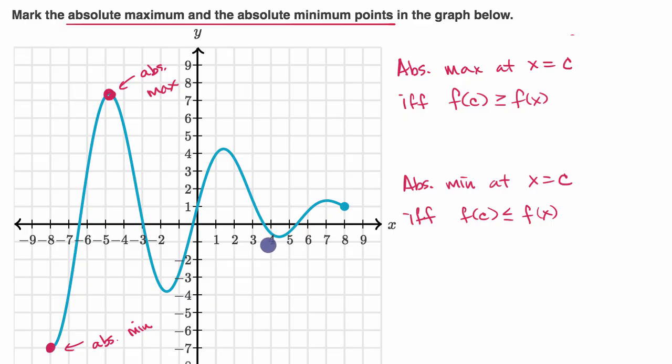Now once again, there is an edge case that you will not see too frequently. So for example, if this function did something like this, so if it went up like this and then it just stayed flat like this, then this would no longer be an absolute maximum point. But any of these points in this flat region, because they're at least as high as any other points on our entire curve, any of those could be considered absolute maximum points.